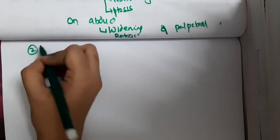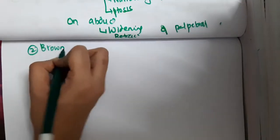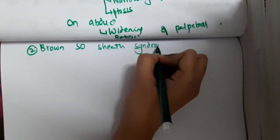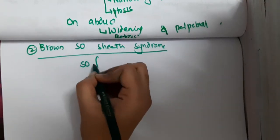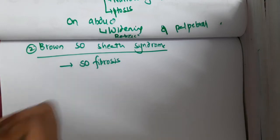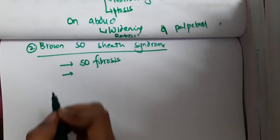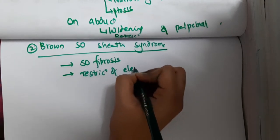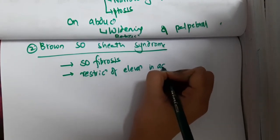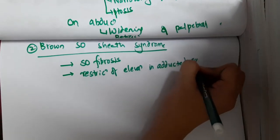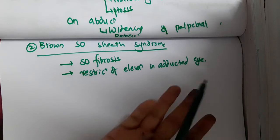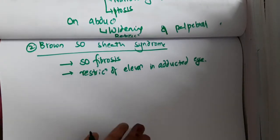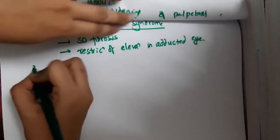The second type is Brown superior oblique sheath syndrome. Here there is fibrosis of the superior oblique. You will see restriction of elevation in the adducted eye, because the superior oblique causes elevation in the adducted eye — and due to its fibrosis, elevation becomes restricted.